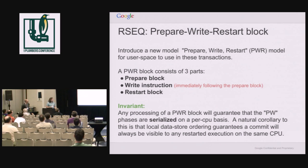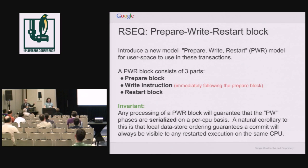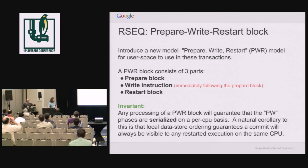What you can say is that anything visible from another CPU — you've seen the entire block. Because these are running on data on a single CPU, the prepare and write always operate on data local to that CPU. You guarantee that any blocks in any order on a single CPU get CPU memory ordering with no memory barriers, and they always see consistent state.